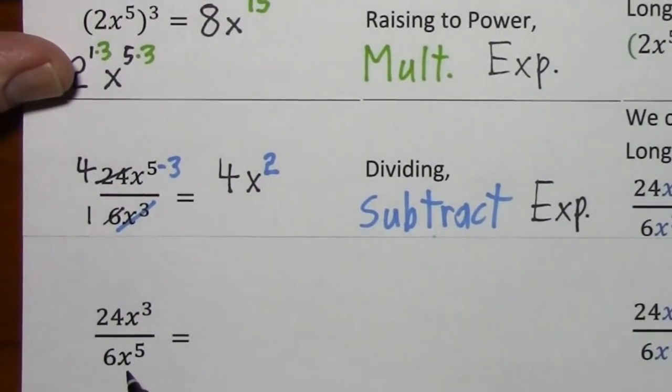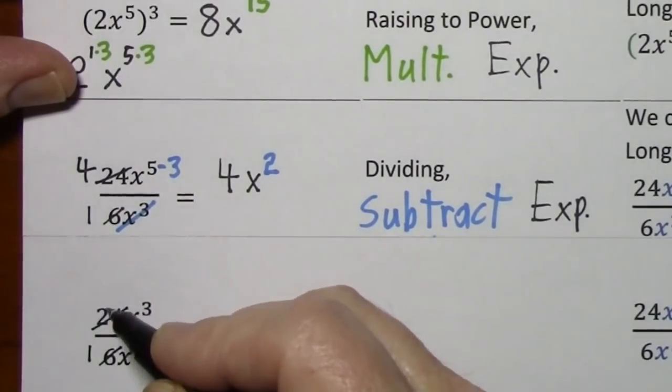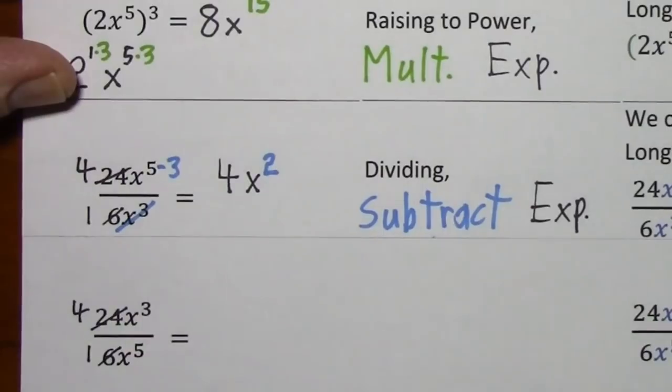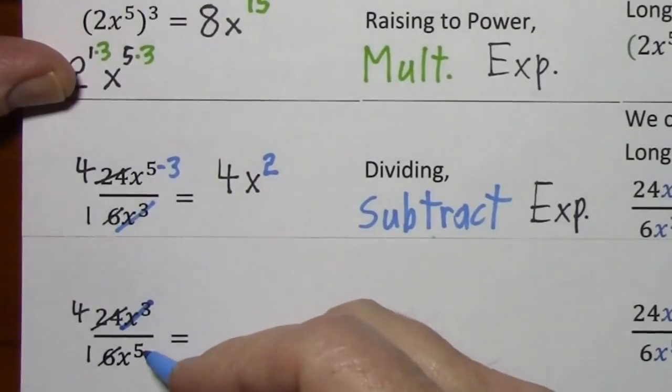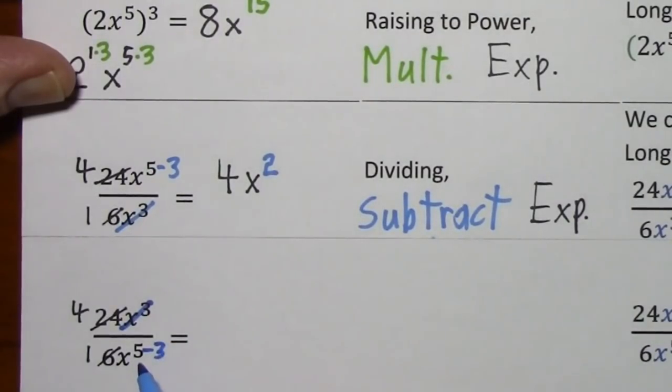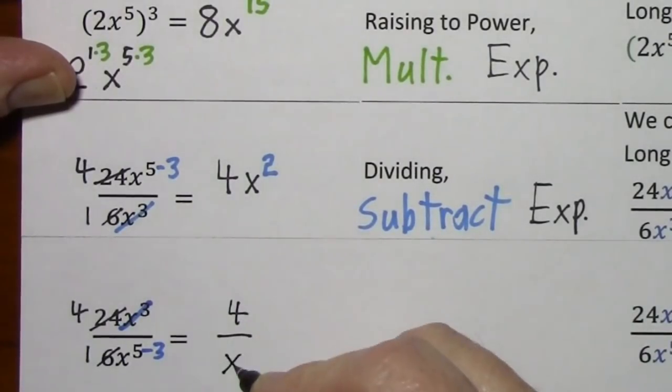So to see that play out the short way, divide by 6, divide by 6. Since x to the third is the smaller one, we can cancel this out completely so long as we subtract 3 from 5. Now this leaves us with 4 over x squared.